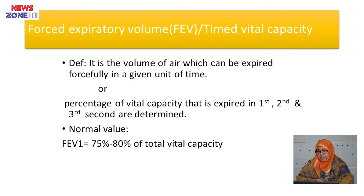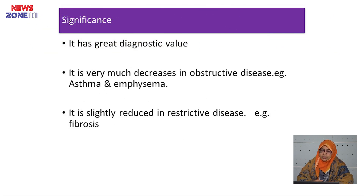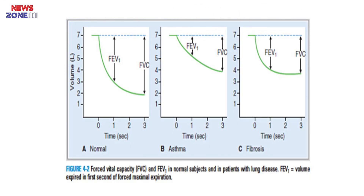What is forced expiratory volume or timed vital capacity? It is the volume of air that can be expired forcefully in a given unit of time, or the percentage of vital capacity expired in the first, second, and third seconds. Its normal value is about 75 to 80 percent of total vital capacity. It has great diagnostic value — it is very much decreased in obstructive diseases like asthma and emphysema, and slightly reduced in restrictive diseases like fibrosis. In the figure, normal FEV1 and FVC are shown, and in asthma both are reduced but FVC is more reduced, while in fibrotic disease FVC is also more reduced.